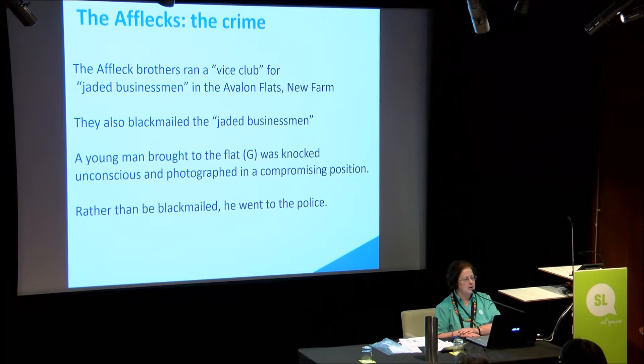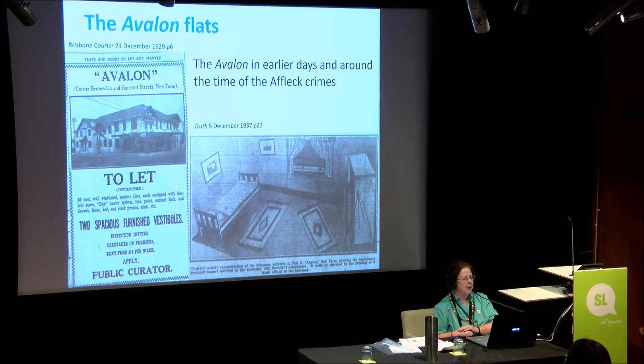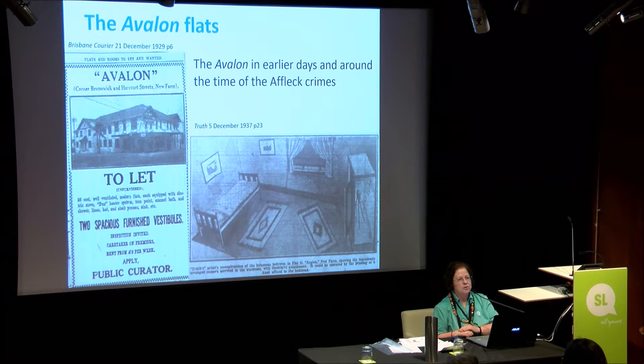The Affleck brothers ran a vice club for jaded businessmen — clue: no women involved — in the Avalon flats. They also blackmailed the jaded businessmen, who obviously didn't want anyone to know about it. These flats were lettered A through to Z. A young man was brought to the flat, knocked unconscious, and photographed in a compromising position. A lot of people would have given in, but he went to the police and then it all hit the fan. There are the Avalon flats, still there today. And naturally it's going to be in The Truth — you can see the camera in the cupboard.